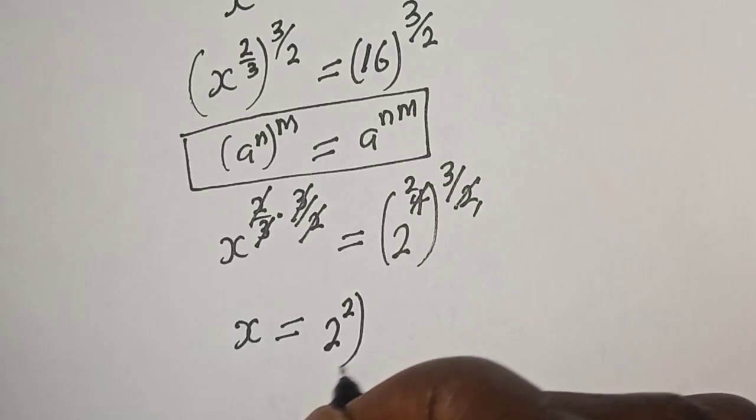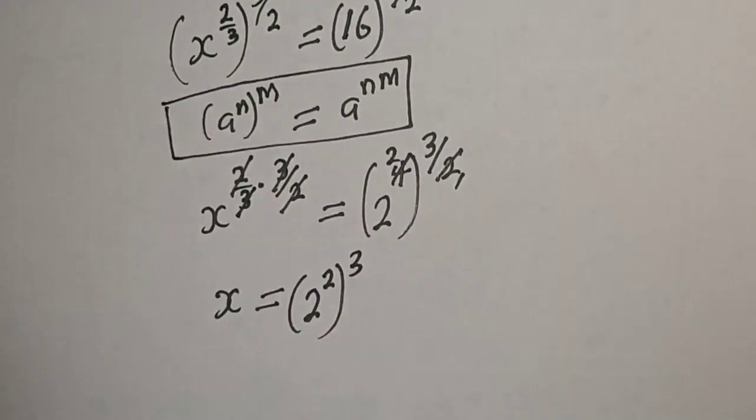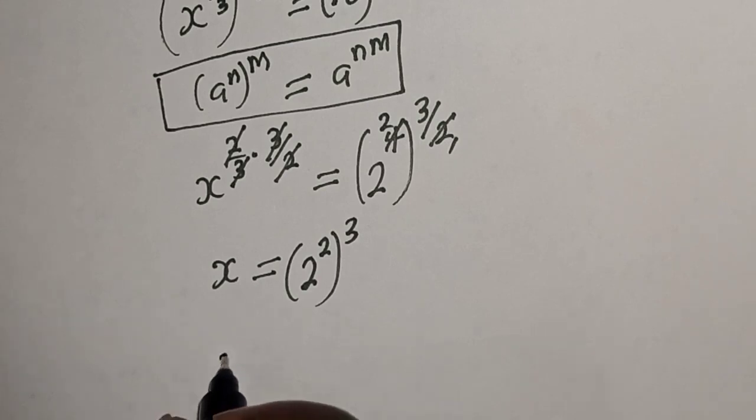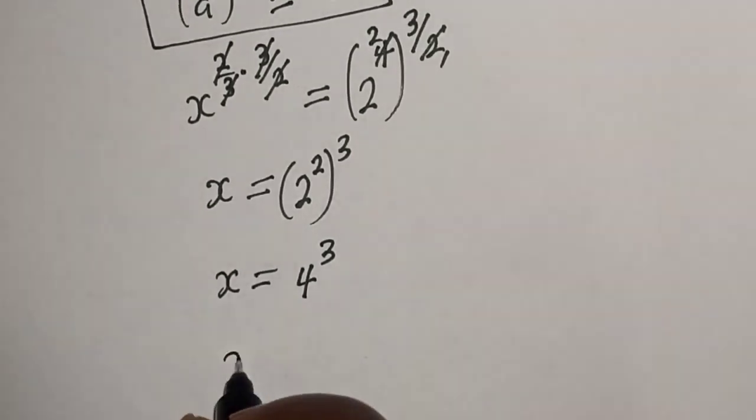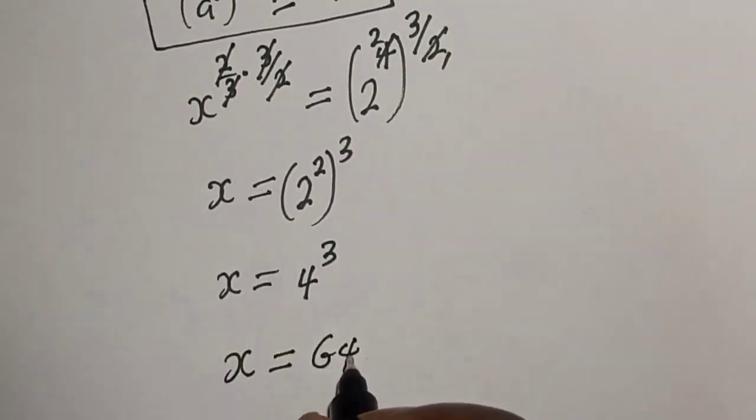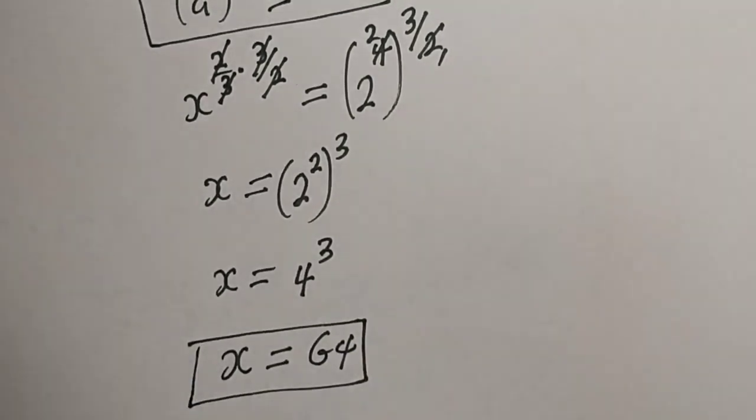2 raised to power 2 to the power of 3. x is equal to 4 raised to power 3. x is equal to 64. This is the final answer.